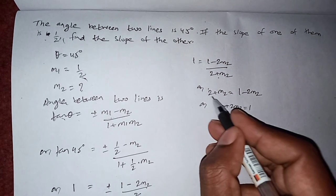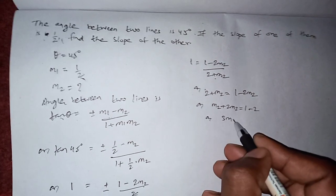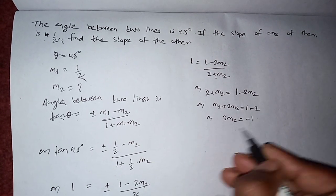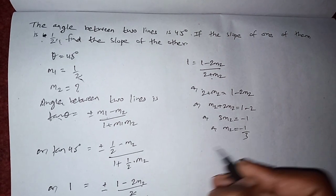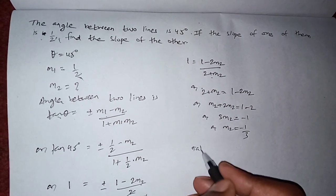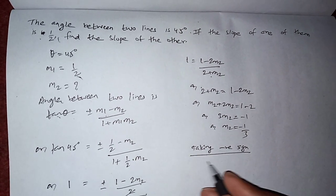2m2 equals to 1, and this 2 to another side will be minus 2. So 3m2 equals to minus 1, or m2 equals to minus 1 by 3.